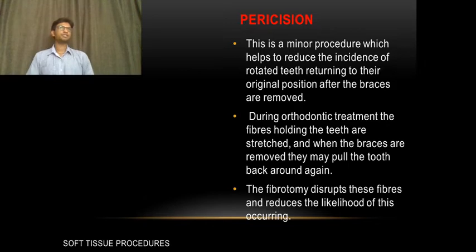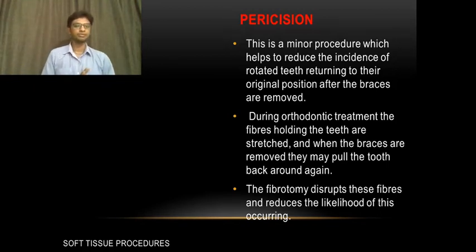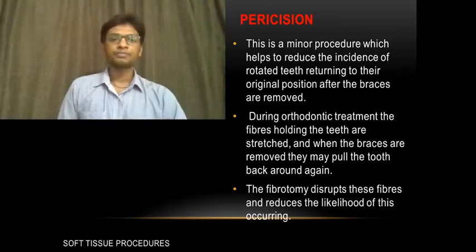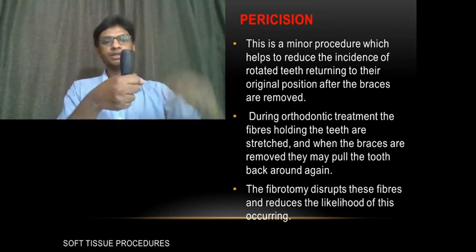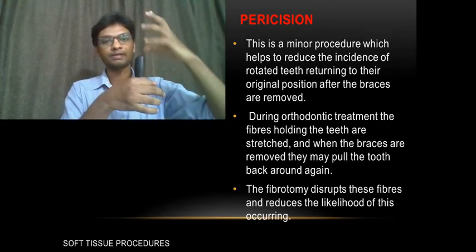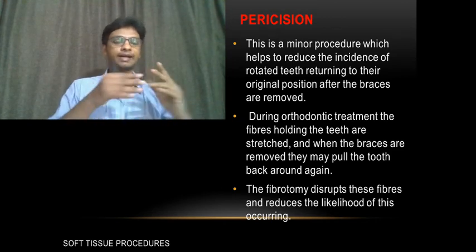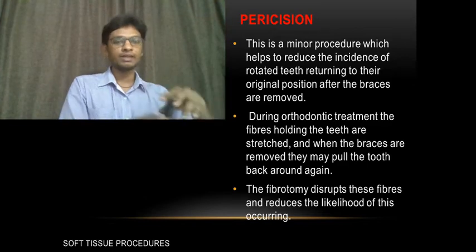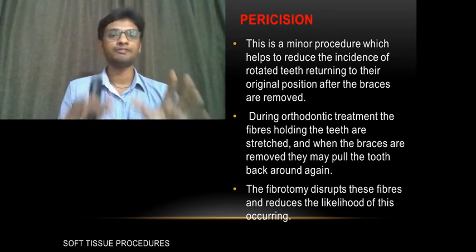The next procedure is pericision, also called supracrestal circumferential fibrotomy (CSF). It is a minor procedure which helps to reduce the incidence of rotated teeth returning to their original position after braces are removed. When you rotate a tooth, the periodontal fibers attached onto the cementum and the alveolar bone get stretched inside. It is a simple treatment but very difficult to retain derotated teeth because all the periodontal ligaments inside are stretched.